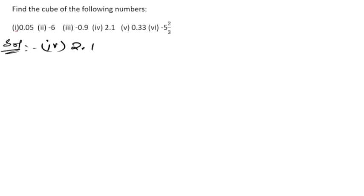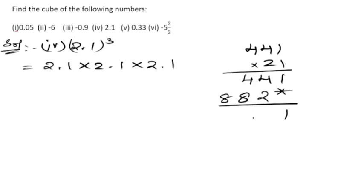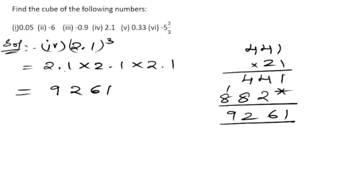Next, 2.1 whole cube: 2.1 into 2.1 into 2.1. We know 21 into 21 is 441. Now 441 into 21: any number multiplied by 1 gives the same, so 441 into 1 is 441; 441 into 2 — ones are 2, fours are 8, fours are 8 — giving 882. Adding: 441 plus 8820 gives 9261. We count three decimal digits total, so the answer is 9.261.